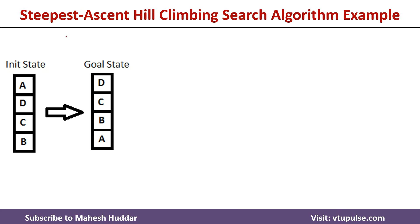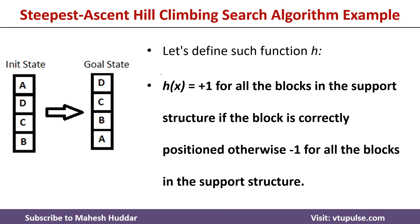To understand the steepest ascent hill climbing algorithm, I will consider this example. This is the initial state given, and this is the goal state. To move from the initial state to the goal state, we need to apply one operator at a time and then consider the heuristic value of each of those particular states. The heuristic function looks something like this.